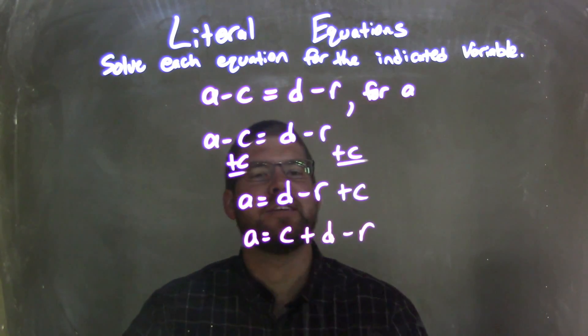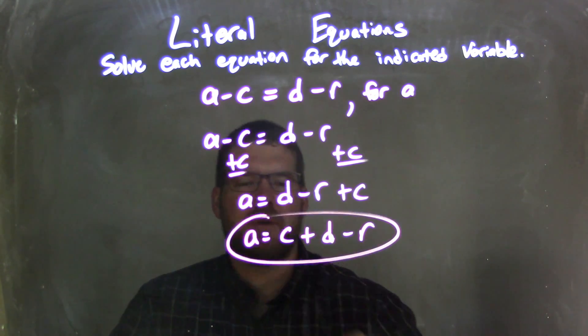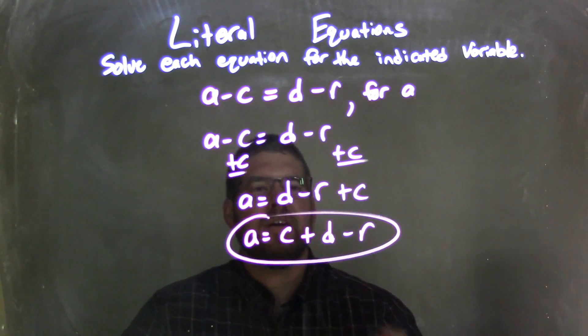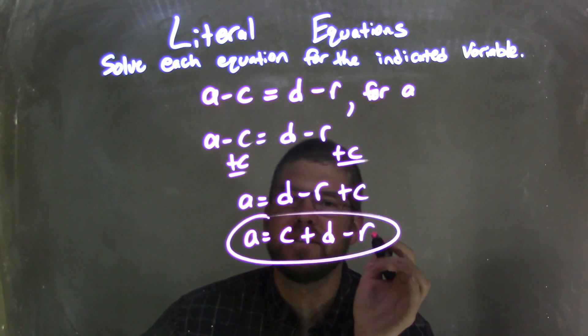It really doesn't matter. If your teacher gets nitpicky about that, that's annoying. But either way, both are right. So we're left with the final answer here. I'm going to use my commutative property to make C out front, but it doesn't really matter. The final answer is A equals C plus D minus R.